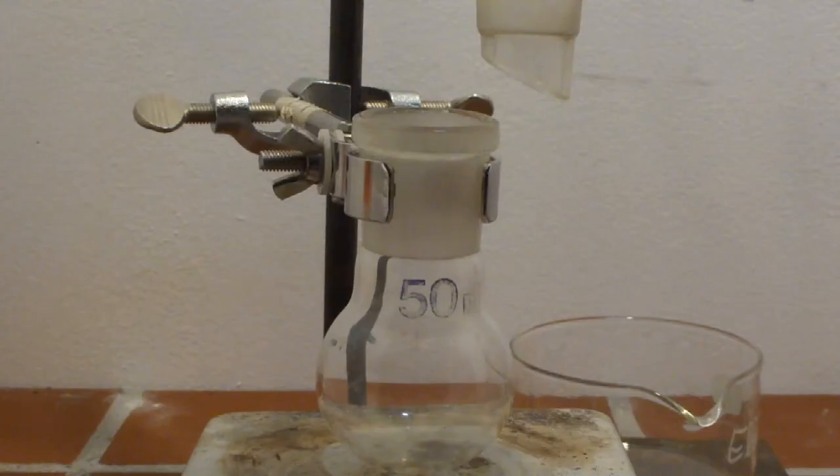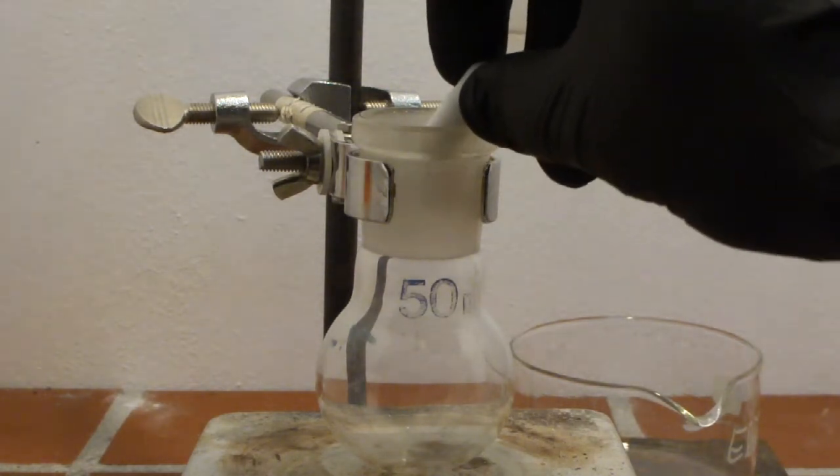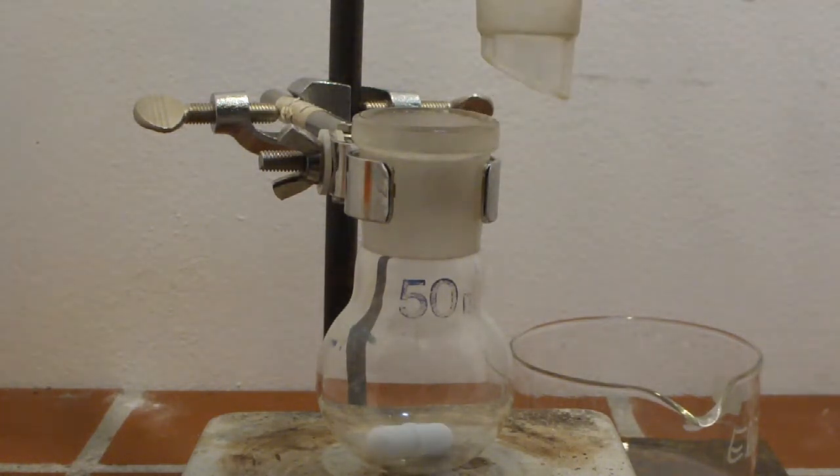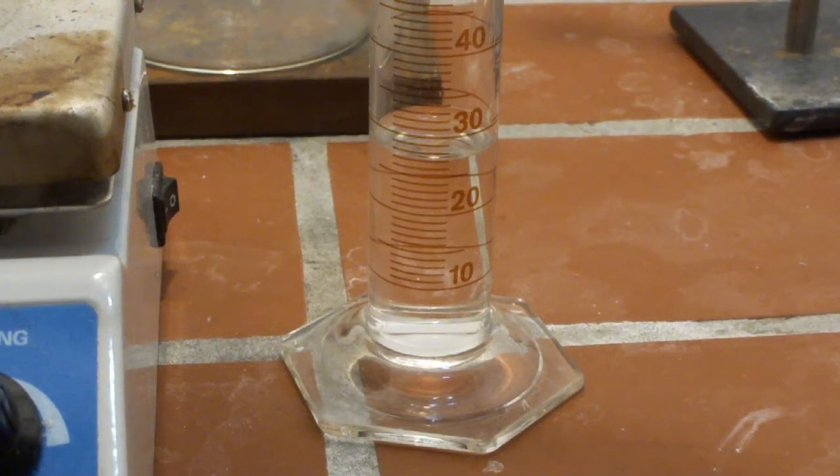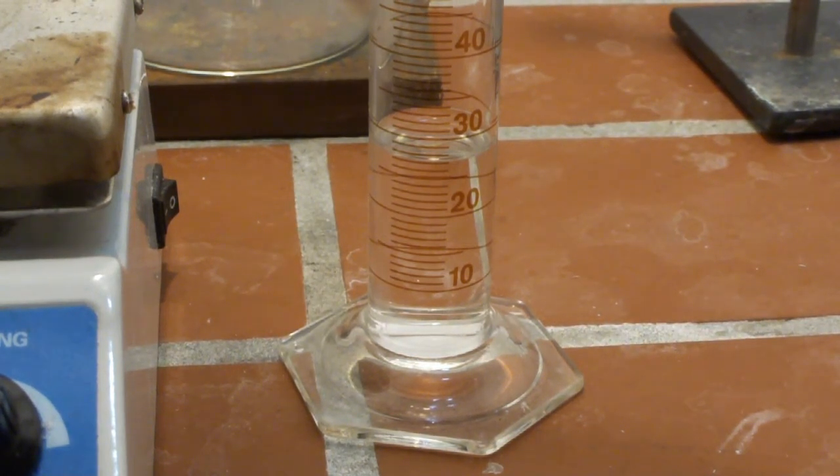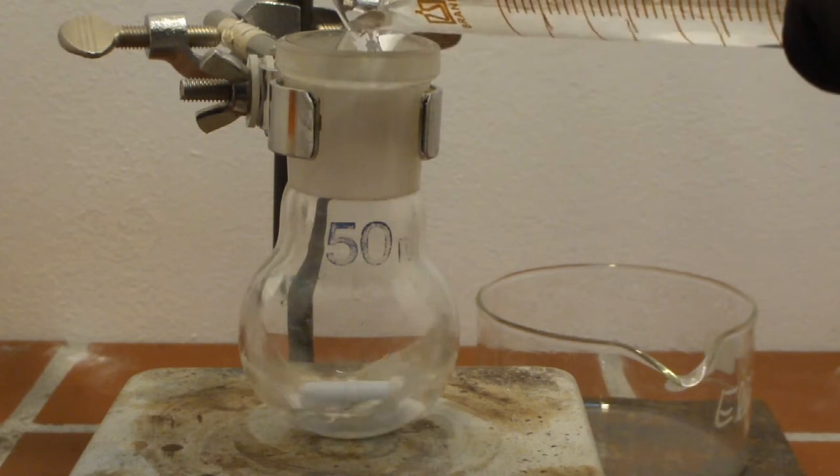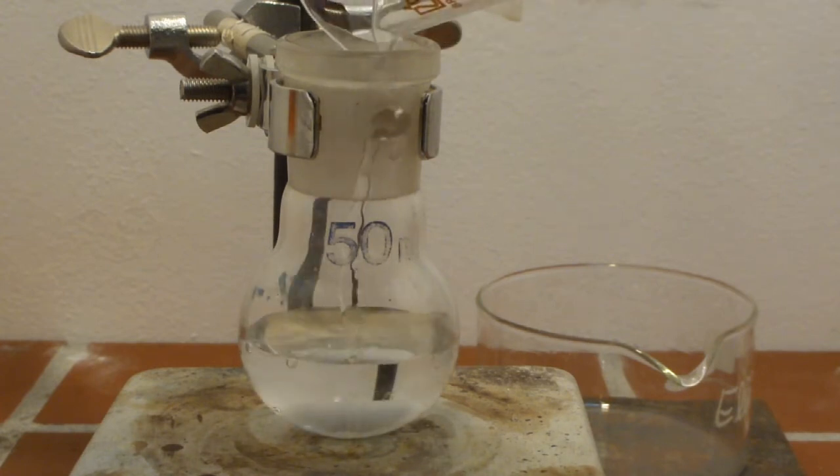Now for our reaction setup. We chose to do this small scale because at least for us, the p-toluene sulfonic acid is more useful than toluene. However, if you want toluene, you can of course scale this up. In our case, we went with a 50ml round bottom flask equipped with a magnetic stir bar. To this, we added 25ml of distilled water, followed by 2.5ml of concentrated sulfuric acid while stirring.